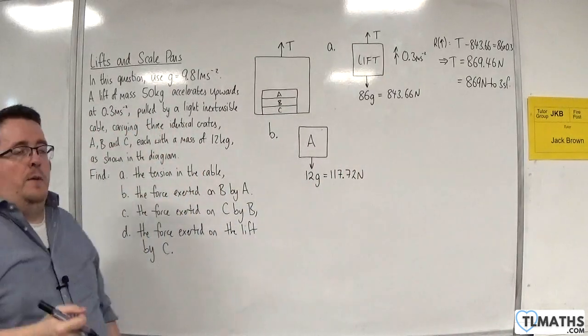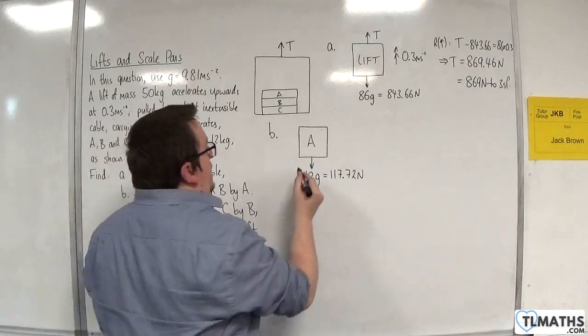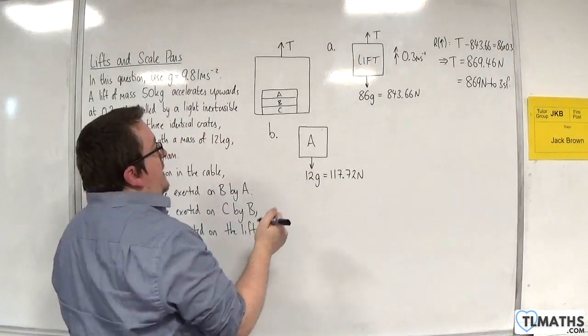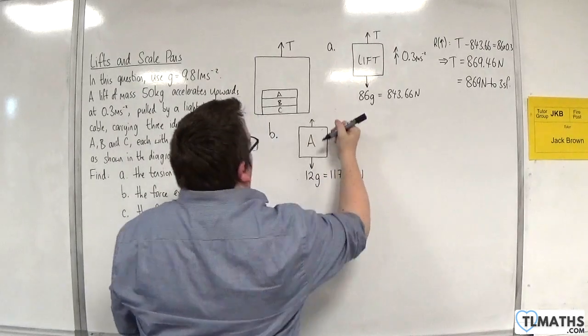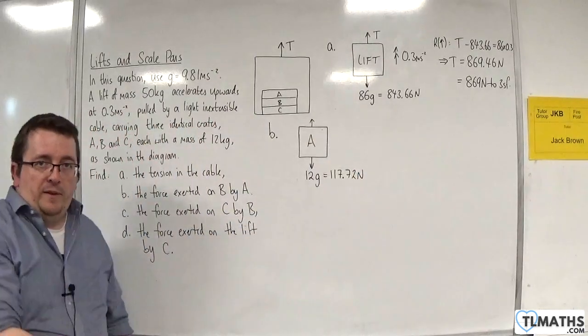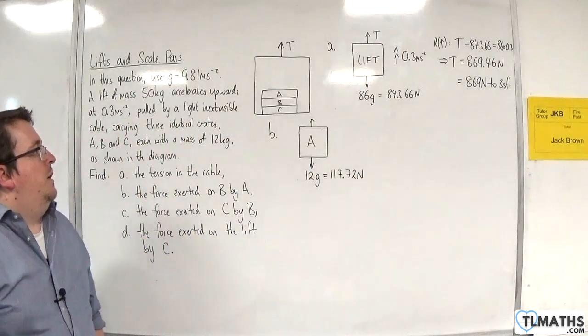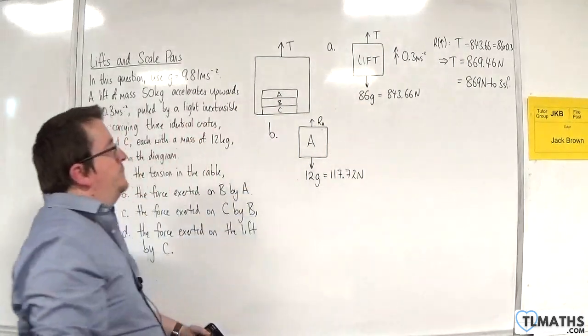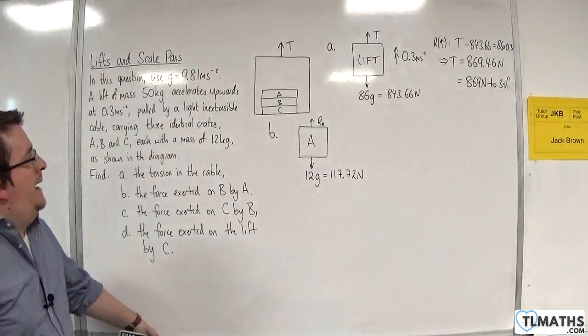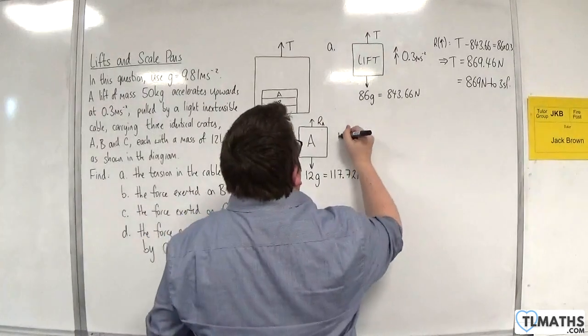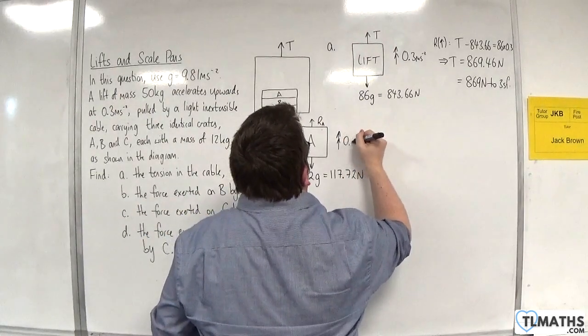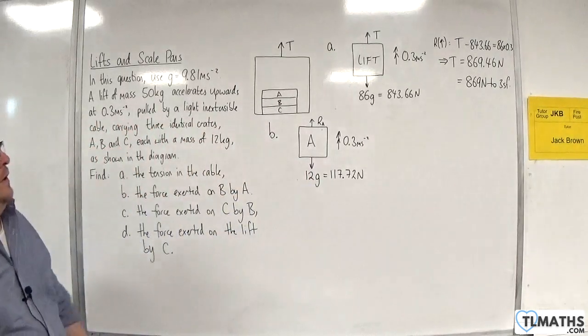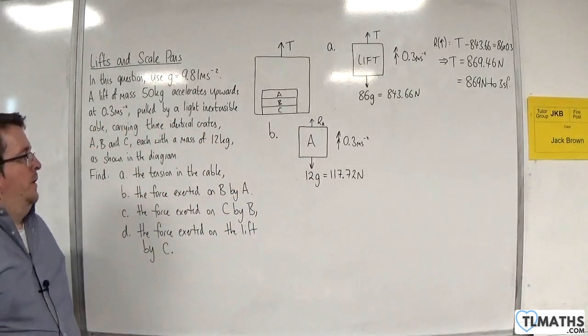Now, because it's in contact with the surface, it is in contact with B, which is directly underneath. There will be a normal reaction, because A is not going to be sinking into B. So there will be a normal reaction force, so let's call that RA. And it's accelerating upwards at 0.3 metres per second per second.